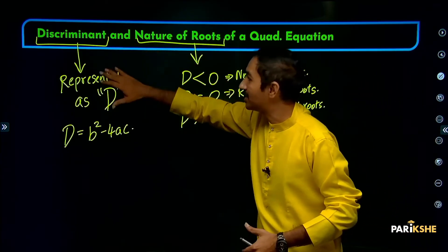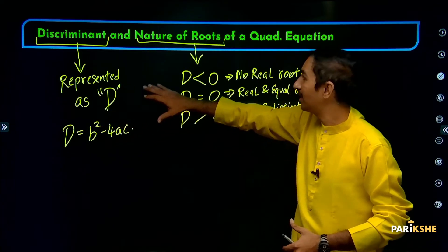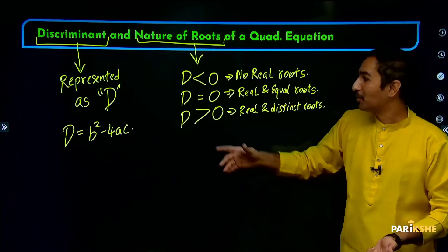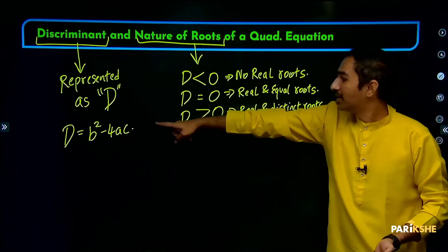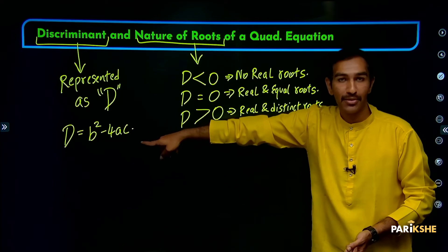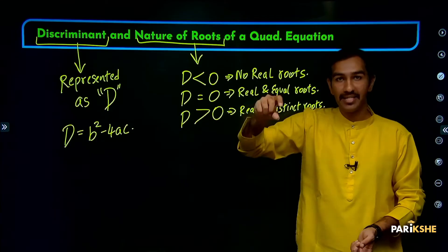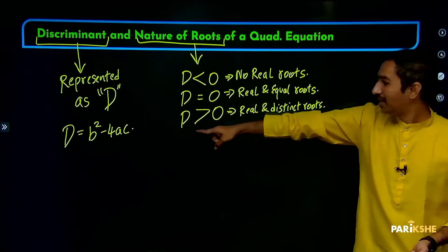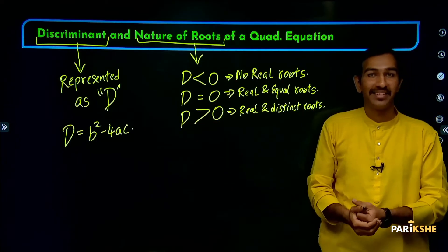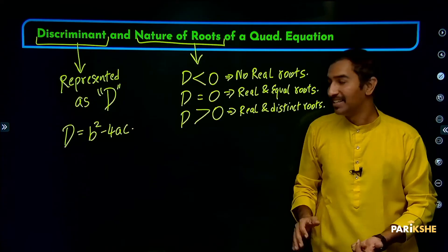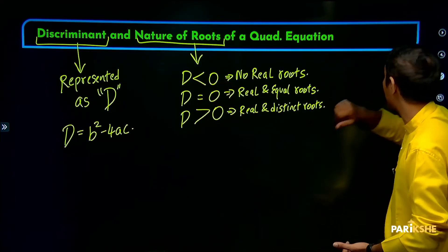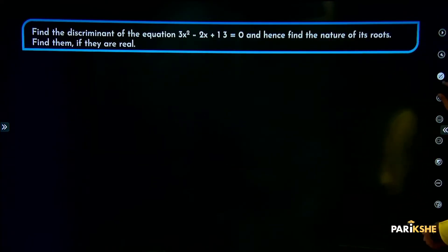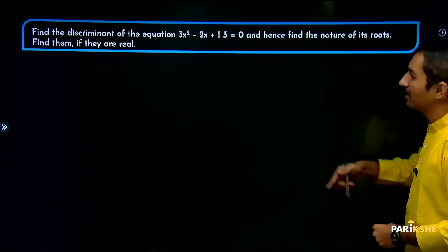This is called the discriminant of a quadratic equation. In the quadratic equation AX square plus BX plus C equals 0, A, B, C are the coefficients. Now let us look at one example.